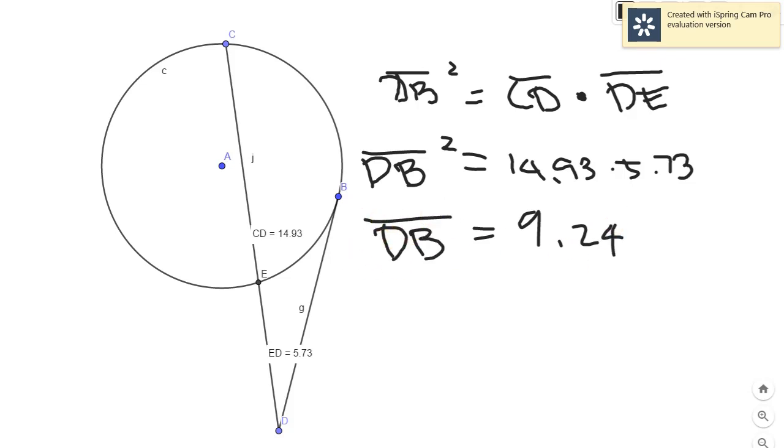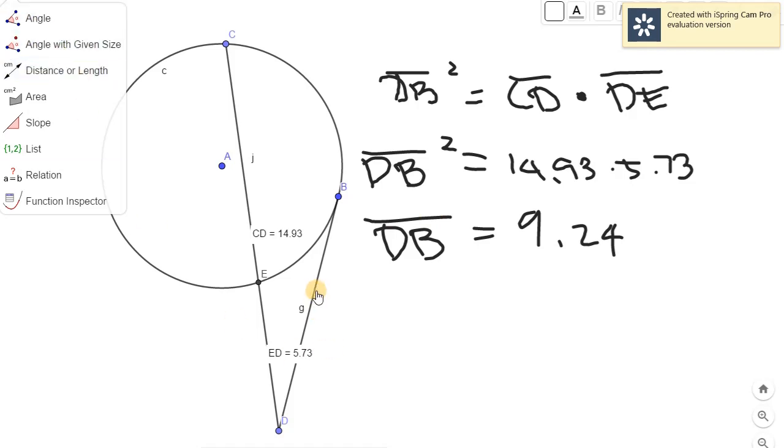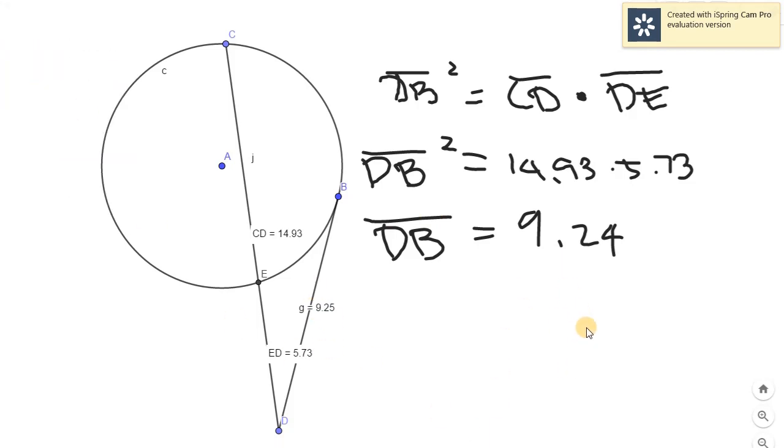And checking the given measurement of this segment, it's so close, 0.01 difference. So this can be used to find the missing parts, the measure of the missing parts.